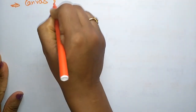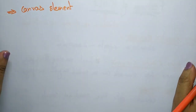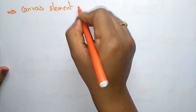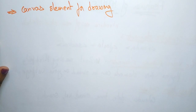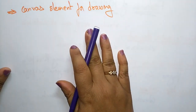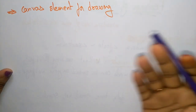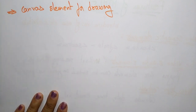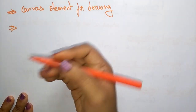The next feature is the canvas element. This is one of the new elements in HTML5. The canvas element is used for drawing. It supports a two-dimensional drawing surface that you can program with JavaScript, allowing you to draw two-dimensional graphics using the canvas element.